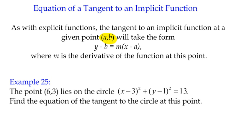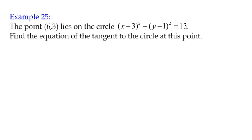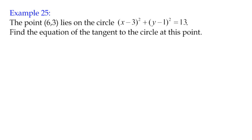So let's have a look at the question. It's quite a good one because we're now able to find the equation of the tangent to a circle. A circle is an implicit function and therefore we can now differentiate the function as it stands and we can find the equation of the tangent. We've got x minus 3 squared plus y minus 1 squared equals 13.